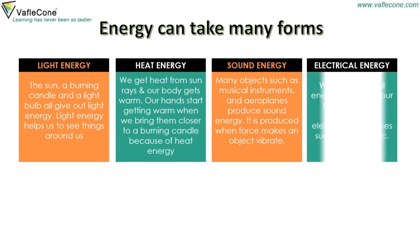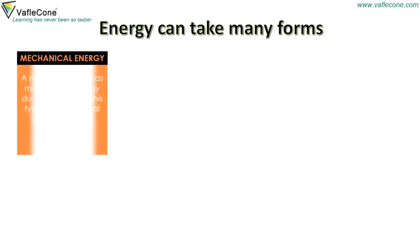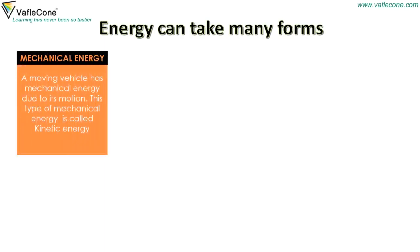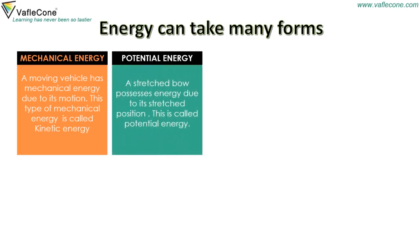Electrical energy: we use electrical energy to light up our homes. It is also needed to run electrical appliances such as fans, televisions, etc. Mechanical energy: a moving vehicle has mechanical energy due to its motion. This type of mechanical energy is called kinetic energy. Potential energy: a stretched bow possesses energy due to its stretched position. This is called potential energy.